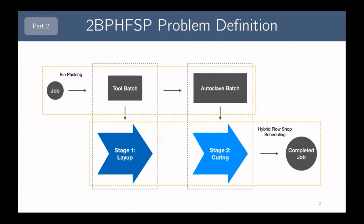At a high level, this figure shows the flow of jobs through the scheduling problem. Jobs are associated with a size, a due date, as well as a processing time in stage one. We pack them into tool batches in a bin packing problem. Tool batches are constrained by a tool capacity, and then they are scheduled in stage one, which we call the layup stage, where the processing time is the sum of processing times of its jobs.